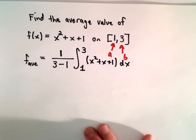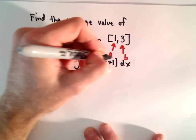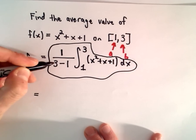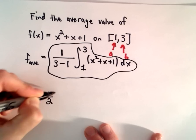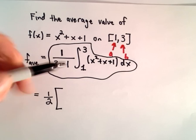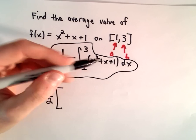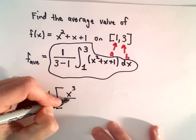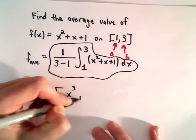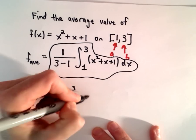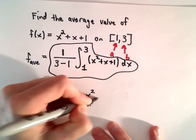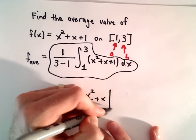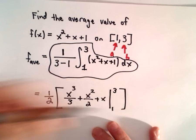And that's now all we have to calculate here. Well, 1 over 3 minus 1, that's just 1 half. Let's integrate the function x squared plus x plus 1. So the antiderivative of x squared, we'll get x to the third over 3. The antiderivative of x is simply x squared over 2. And then the antiderivative of 1 will simply be x. And we have to evaluate this from 1 to 3.